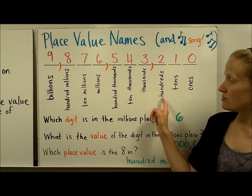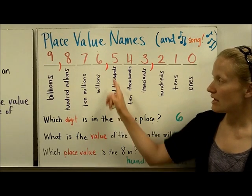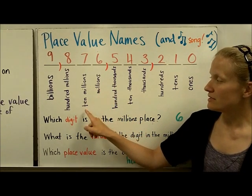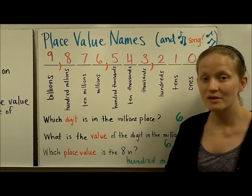It goes like this: ones place, tens place, hundreds place, comma, thousands, ten thousands, hundred thousands, comma, millions, ten millions, hundred millions, comma—just 10 digits to a billion.